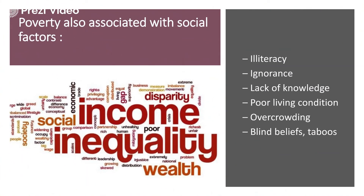Poverty is also related to social factors. There are certain wrong social trends in society — for example, low education, not providing education to girls, total ignorance, and a narrow horizon. There is also lack of knowledge in certain areas such as cleanliness, sanitation, and hygiene, which have a lot of impact. Poor living conditions, overcrowding, and blind beliefs and taboos further compound the problem. People who are illiterate are more prone to accepting the blind beliefs and taboos existing in society.